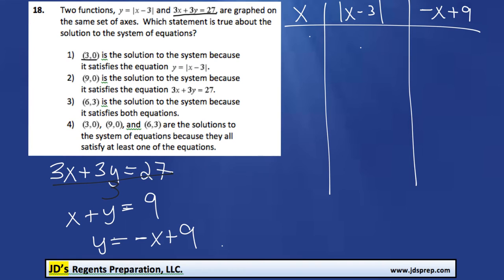So the first one says 3, 0 is the solution. So that means we're going to replace x with 0. This would be the absolute value of 0 minus 3, which is negative 3, and the absolute value of that would be 3. And then negative x plus 9, negative 0 plus 9 is positive 9. So we can see this doesn't work. We do not get the same solution.